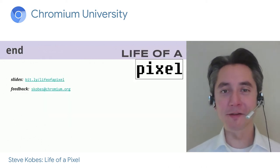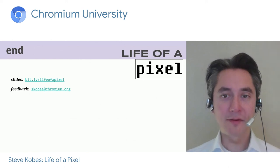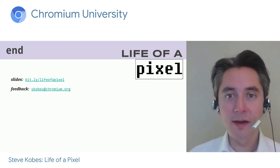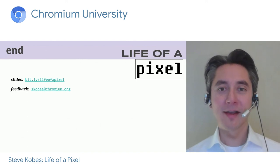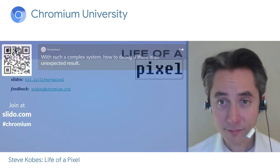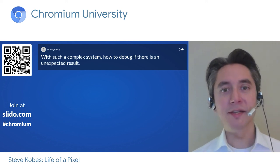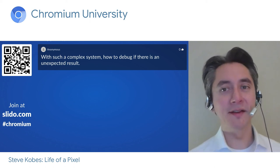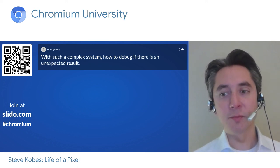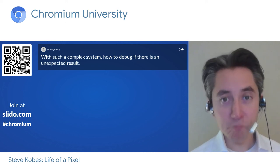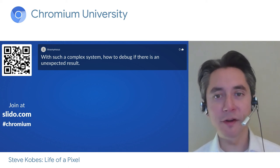That's the end of Life of a Pixel. If you have questions, go to slido. Rendering is huge and complicated — probably more complicated than necessary. The good news is that refactorings underway, like Layout NG and Composite After Paint, are adding short-term complexity but aiming toward a simpler end state. The Chromium project needs to continue to prioritize simplifying the system, paying down technical debt, and explaining and documenting the complexity for folks coming into the codebase.